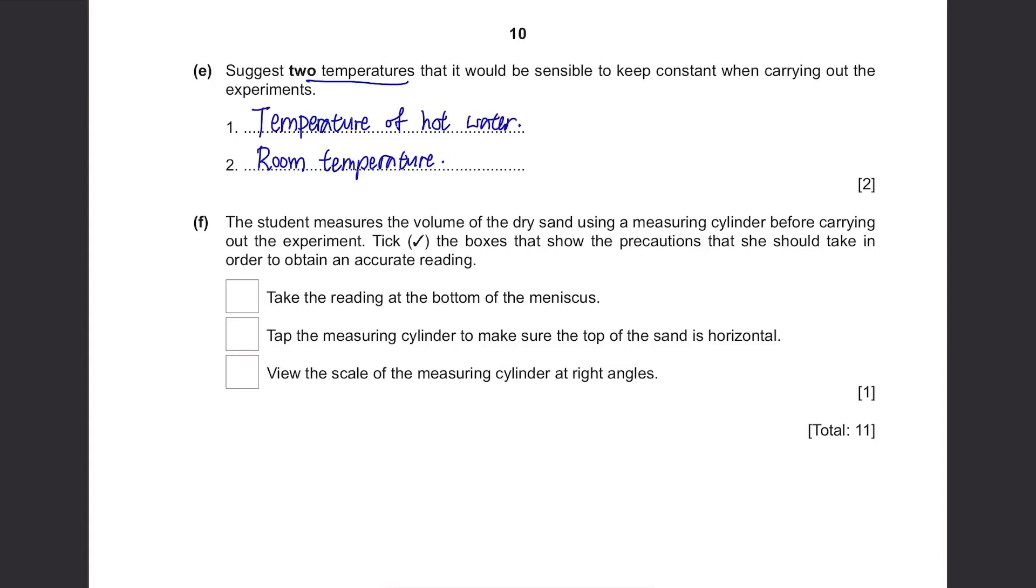Part F. The student measures the volume of the dry sand using a measuring cylinder before carrying out the experiment. Tick the boxes that show the precautions that she should take in order to obtain an accurate reading. Take the reading at the bottom of the meniscus. This is dry sand, a solid substance. So there won't be a meniscus, you just need to read the top part of the sand. Tap the measuring cylinder to make sure the top of the sand is horizontal. Yeah, this is a good precaution. Make the surface even and the reading will be more accurate. View the scale of the measuring cylinder at right angles. Yeah, to avoid parallax error, you need to read it at the same level as the scale.